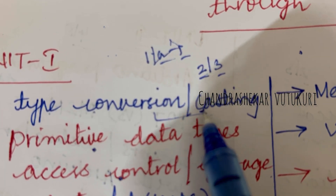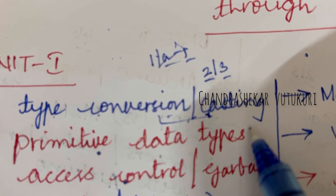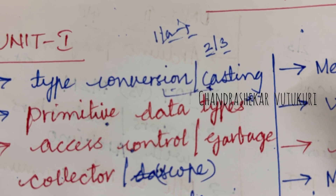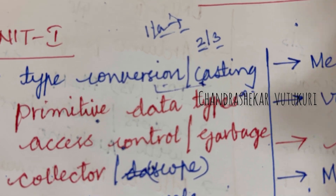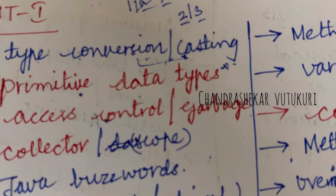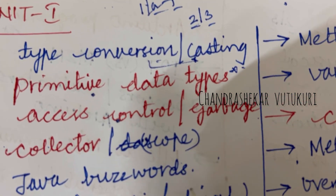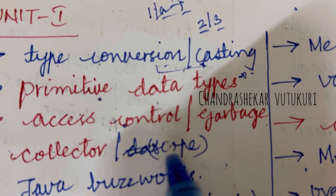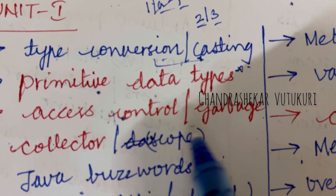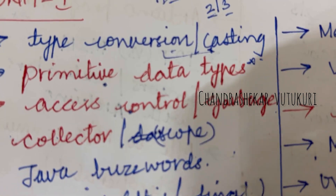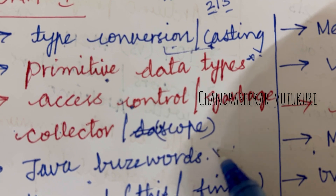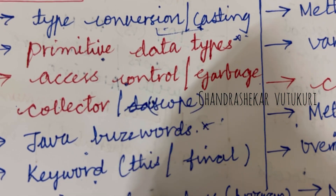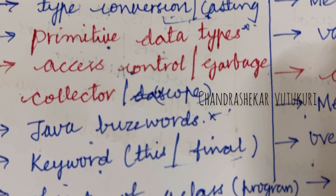Type conversion and casting may be the topmost question. Primitive data types may also be asked. We cannot expect which question may occur, so you need to be thorough with each and every parameter. Access control and garbage collector may be the short question. Java buzzwords may also be the short question. The 'this' keyword and the 'final' keyword and their differences may be asked.